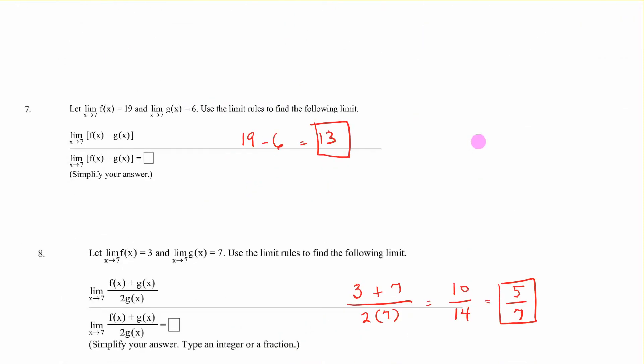Number seven. The limit of f of x as x approaches 7 is 19. And as it approaches 7, g of x, it's 6. Use the limit rules to find the following limit. So we can subtract the limit as x approaches 7 of f of x minus g of x is simply 19 minus 6. That is a rule. We can just subtract and get the 13.